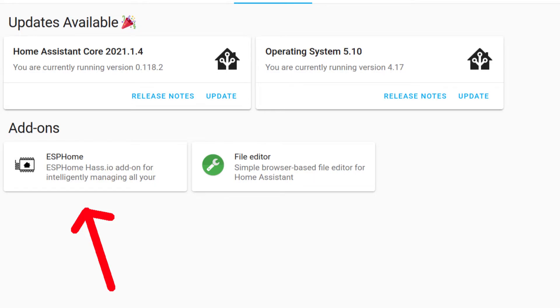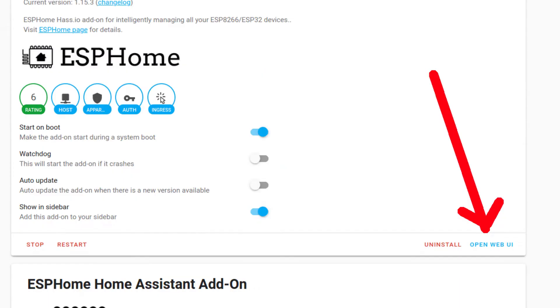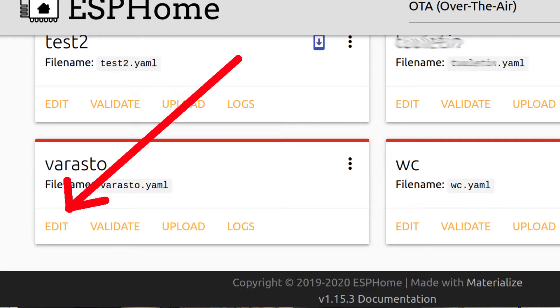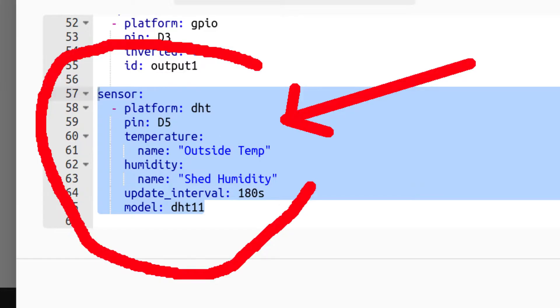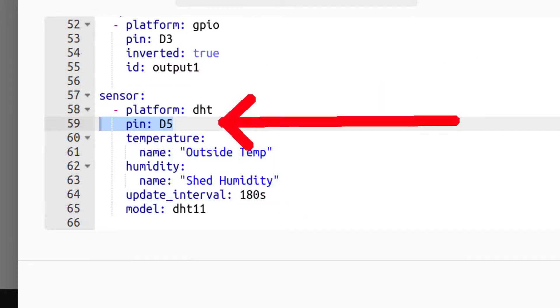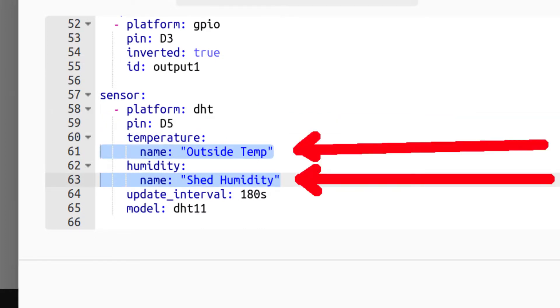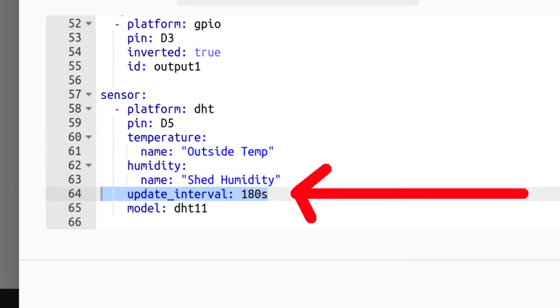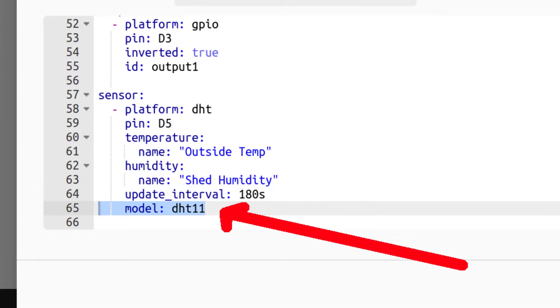When you have your ESPHome device configured in Home Assistant, go to the ESPHome interface. That is the web user interface. Open the configuration of your ESPHome device. And paste in this piece of code, I will put that also in the description, don't worry. Change the pin to your pin, I was using the D5. Choose some names for your sensors. Adjust the update interval. I have it on 3 minutes. That means that the Home Assistant will receive the latest value every 3 minutes. And you may add this line to specify which model you are actually using.